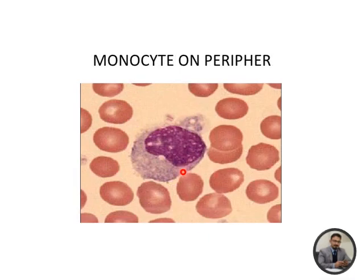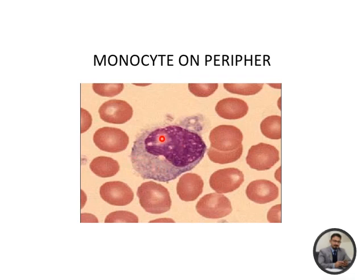This is an active monocyte on a peripheral blood smear. It has vacuolation, bluish-gray cytoplasm, and an irregular nucleus.